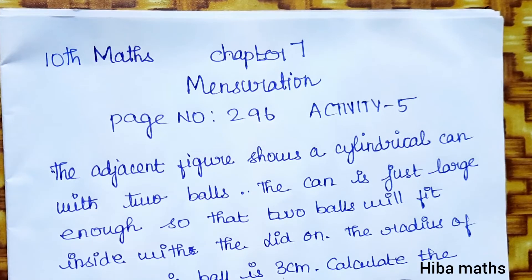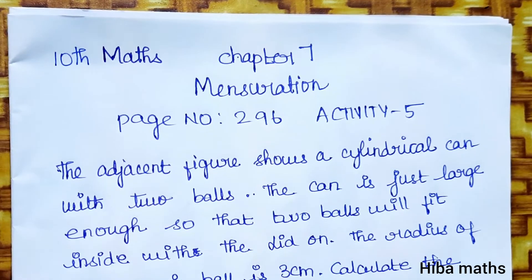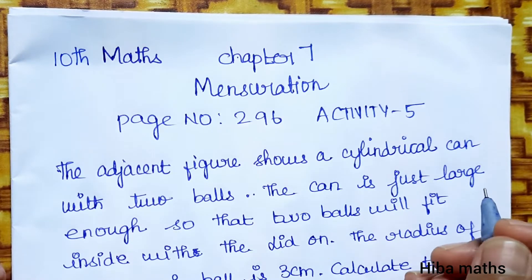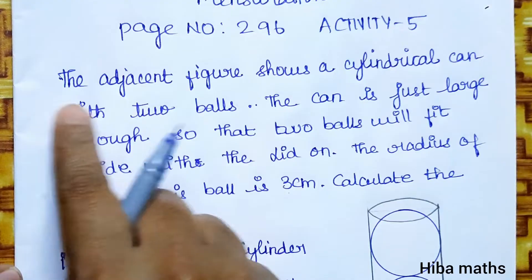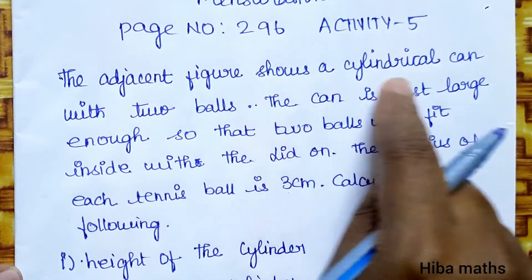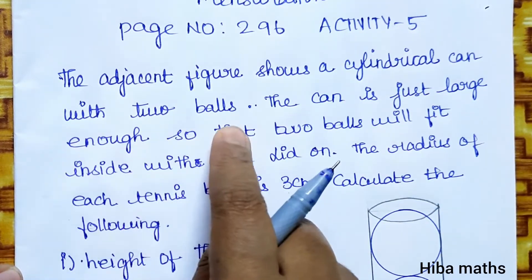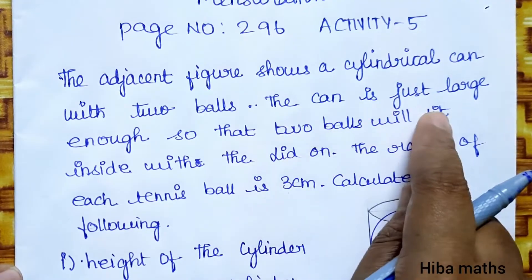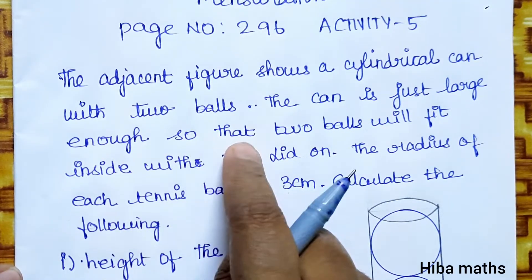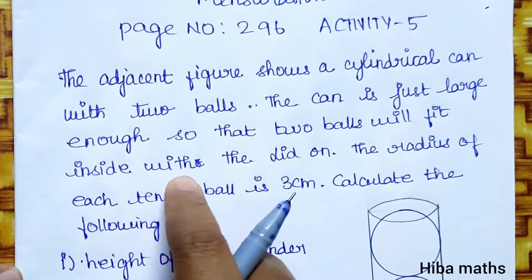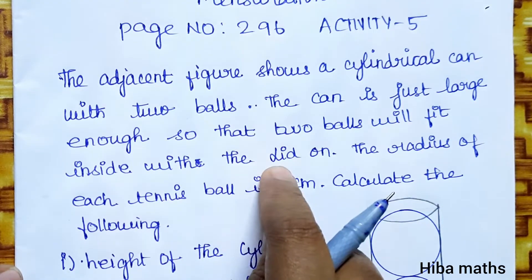Hello students, welcome to Hibamaks 10 standard maths, chapter 7 mensuration, page number 296, activity 5. The adjacent figure shows a cylindrical can with two balls. The can is just large enough so that two balls will fit inside with the lid on.